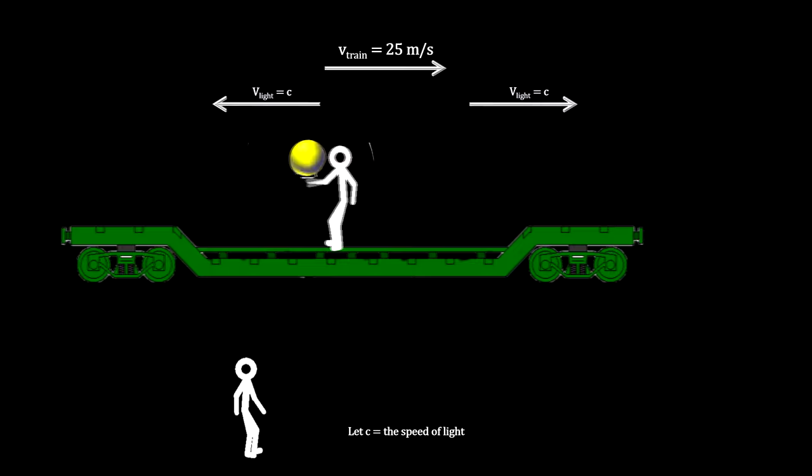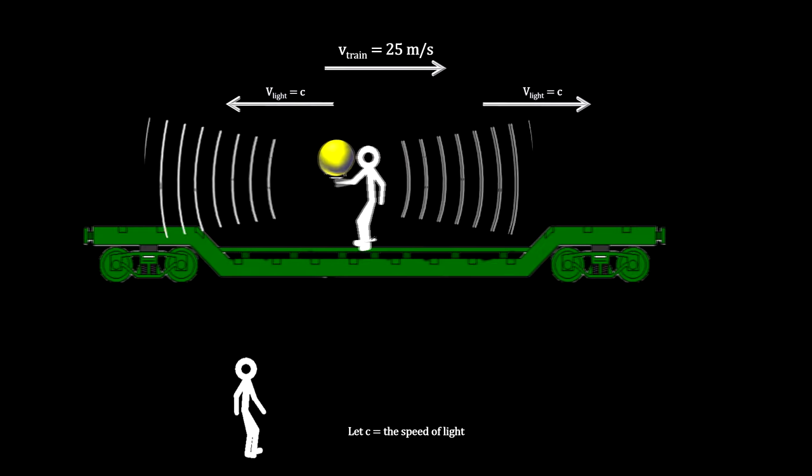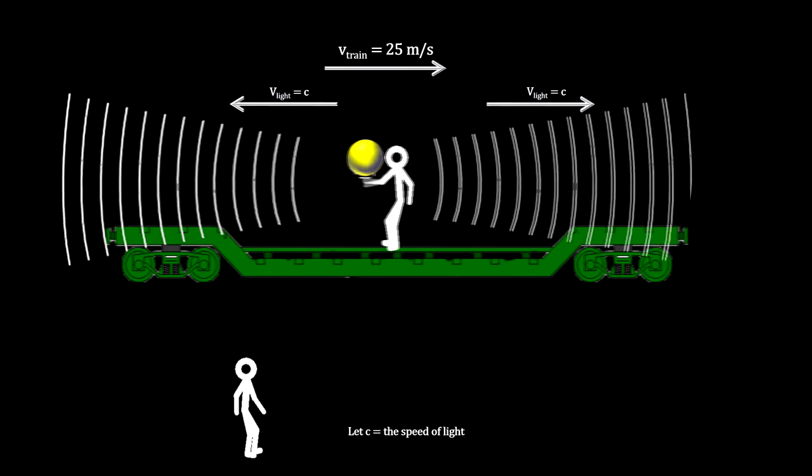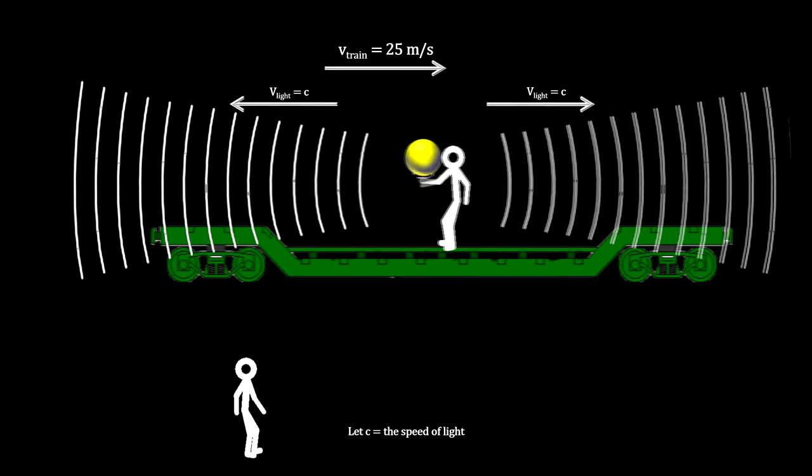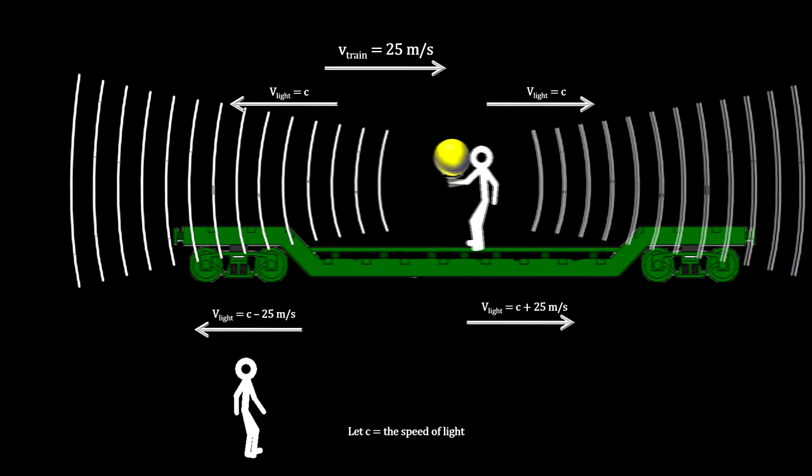This was a remarkable achievement, but it created a problem. The Galilean transformations would have the speed of light adjusted for the relative speed between reference frames. But Maxwell's value is a constant. It does not change for the observer on the train and the observer on the ground.